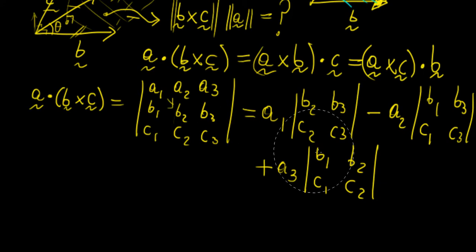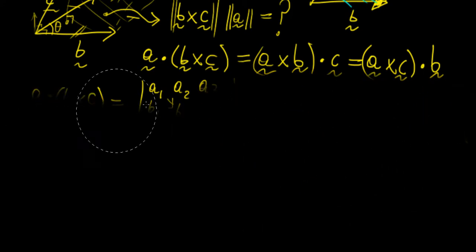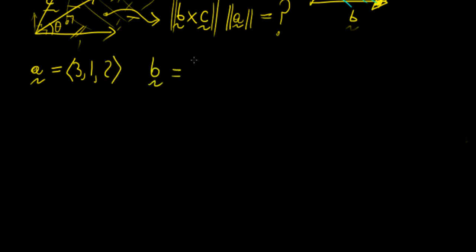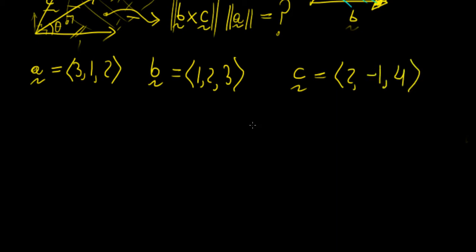Now let's move on to an actual example. Let's say we have three vectors: a = (3, 1, 2), b = (1, 2, 3), and c = (2, −1, 4). To visualize this, let's plot them on a set of three axes x, y, z, with some numbers going in the negative direction.